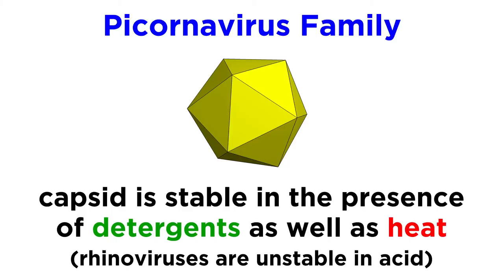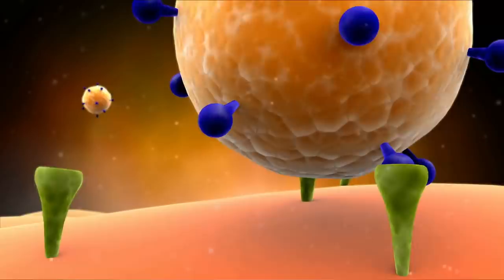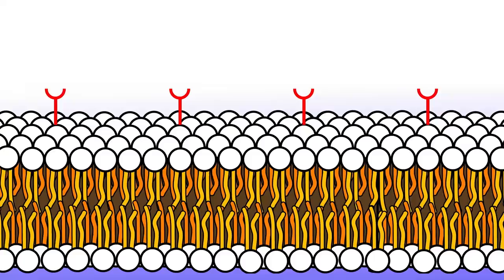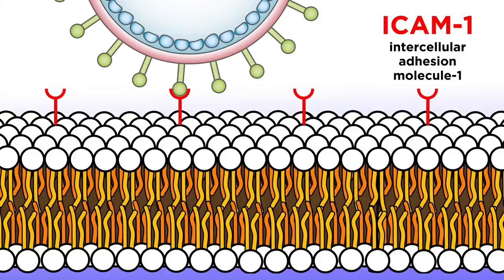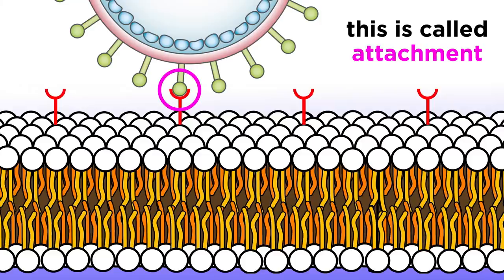Now let's dig into how these viruses do their damage. Picornavirus particles attach to host cells by binding to specific host cell receptors. These host cell receptors have normal functions in host cells — it just so happens that these viruses have adapted to bind to them. To be more specific, upwards of 80% of rhinoviruses bind to specific molecules called ICAM-1, which stands for intercellular adhesion molecule 1, on the surface of epithelial cells, fibroblasts, and endothelial cells. The process of the virus binding to the appropriate receptor on the appropriate type of cell is what we refer to as attachment.